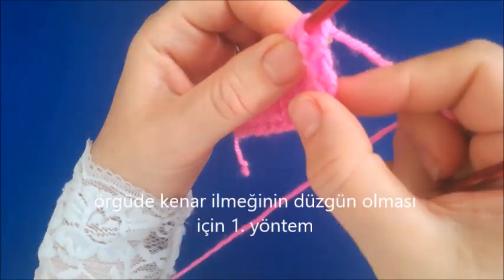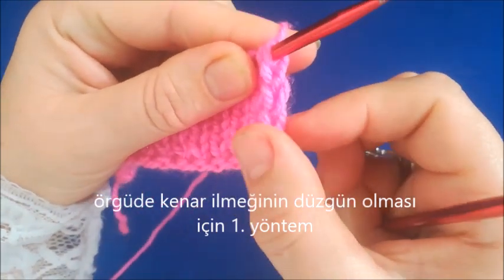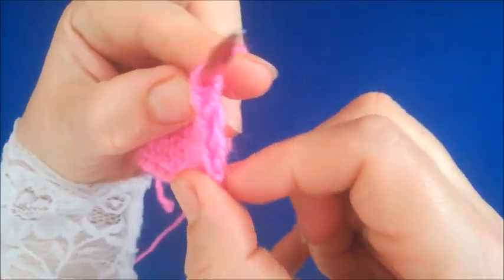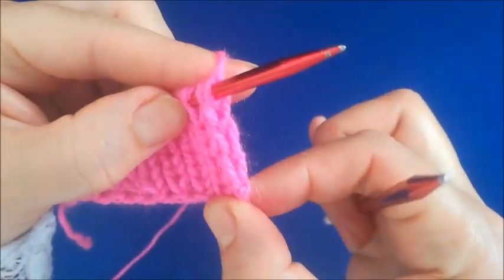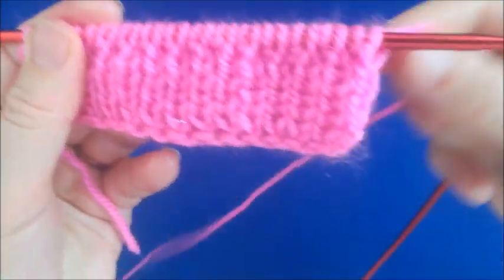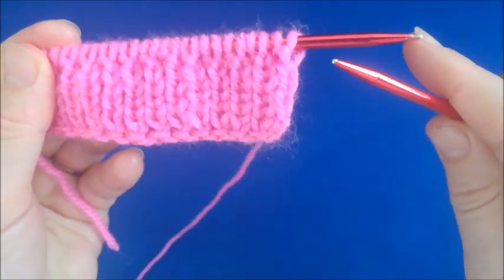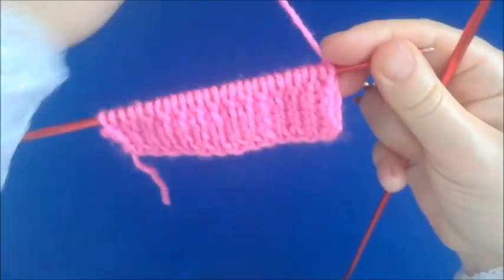Örgülerimizde şu kenar sırasının düzgün olması, marullanmaması için, şurada da küçük bir ayrıntı var. Şu şekilde bakın. İlmek atılmış gibi bir görüntü var. Bunu oluşturmak için de, her sıramızın başında ilk ilmeğimizi örmeden alıyoruz. Onu da göstereceğim.